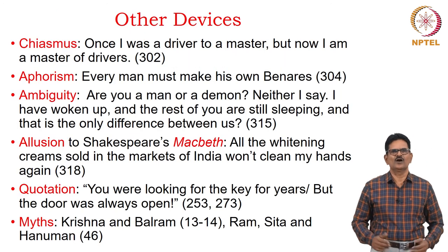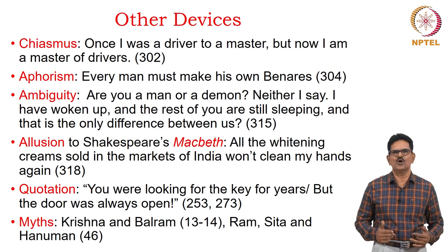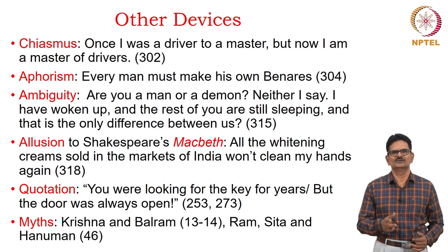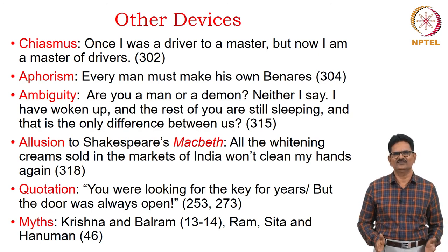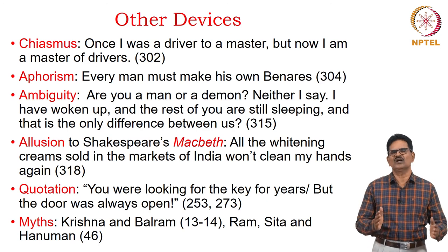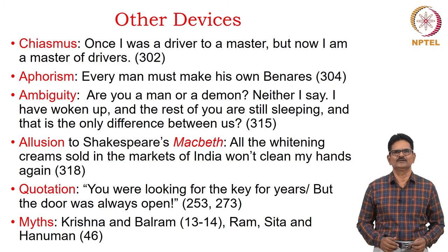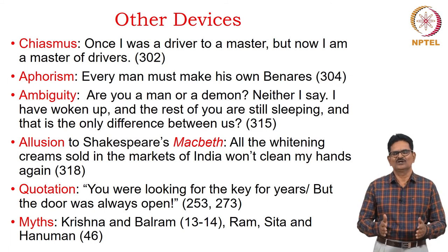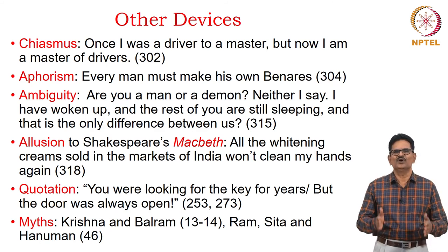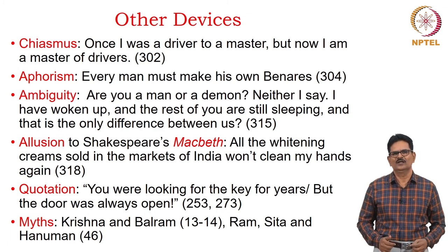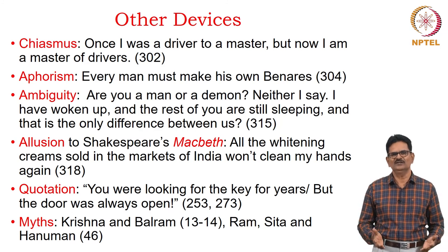There are many other devices in the novel, like chiasmus. We have the example: 'Once I was a driver to a master, but now I am a master of drivers.' This shift — from 'driver to a master' to 'master of drivers' — is called chiasmus. We have an aphorism: 'Every man must make his own Banaras' — everyone has to meet his own fate. Then we have ambiguity in sentences like: 'Are you a man or a demon?' After Ashok is killed by Balram, he says: 'Neither, I say. I have woken up, and the rest of you are still sleeping — and that is the only difference between us.' Balram differentiates himself from the rest — he has woken up from his poverty, from his slavery.